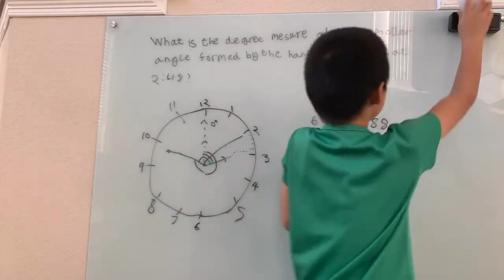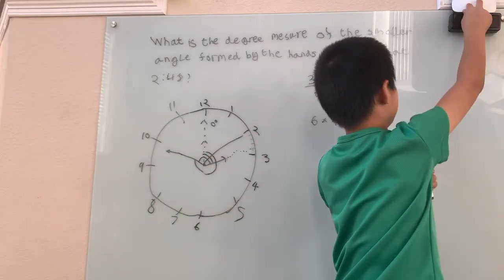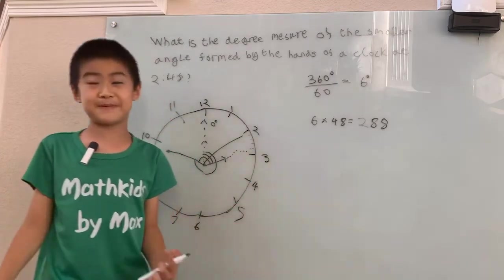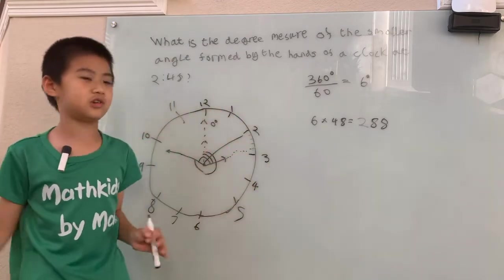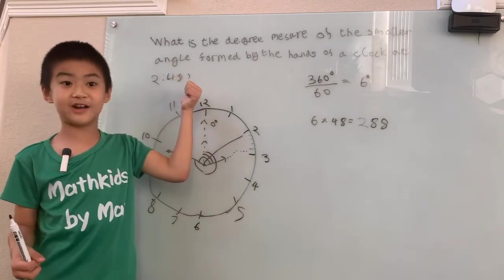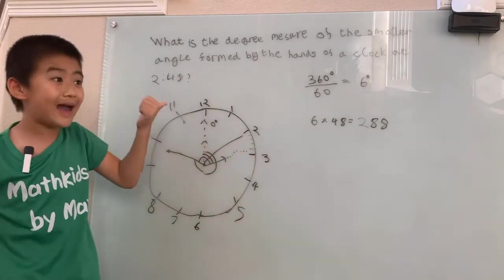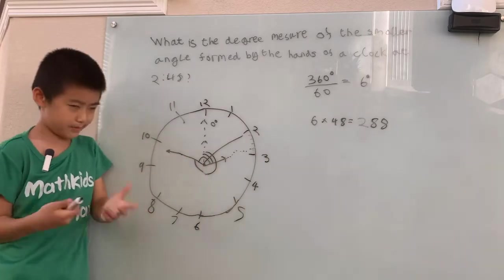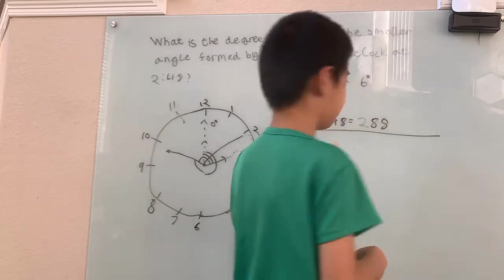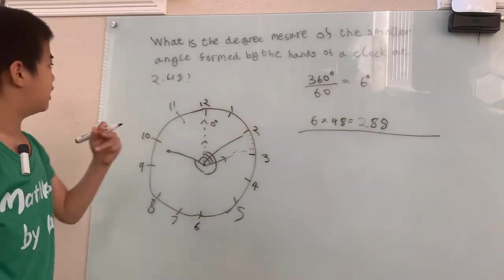I'm going to teach you the more slick way that can help you solve all the problems no matter what time this is. This way only helps to solve the problems where the minute, the 48, is divisible by 12. But this next way has to do with ratios and proportion. You might be thinking, oh Max, that's way too hard and complicated. Well, what if that's a 49? What are you going to do with that? You got to use proportions.